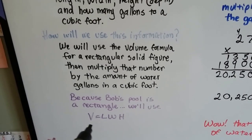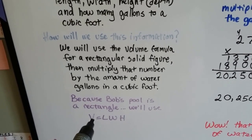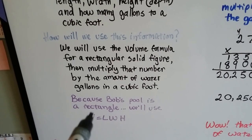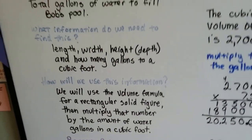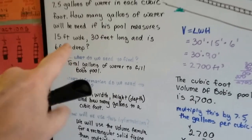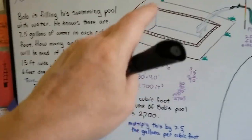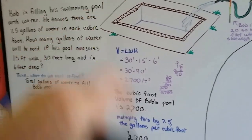So because Bob's pool is a rectangle, we're going to use V equals LWH. Volume equals length times width times height. And because the pool is 6 feet deep, we're going to use that for the height. So even though it's underground, it's still a height.